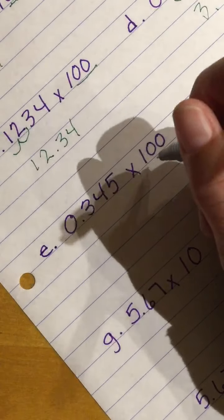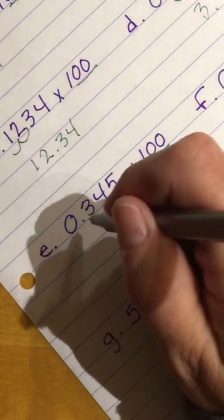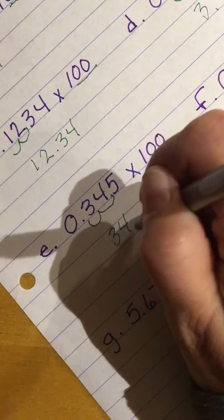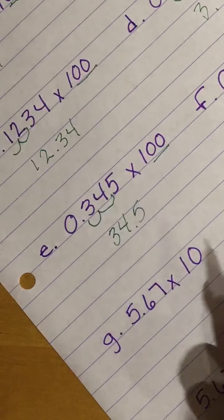Our next problem, I have two 0s. Two 0s. One, two. So I am going to have 34 and 5 tenths.